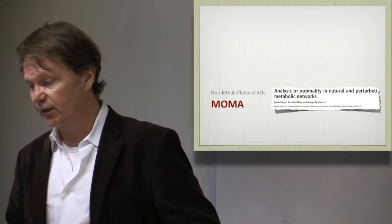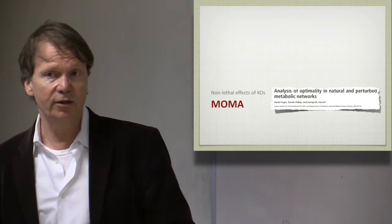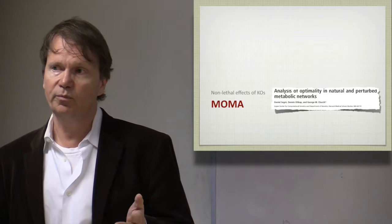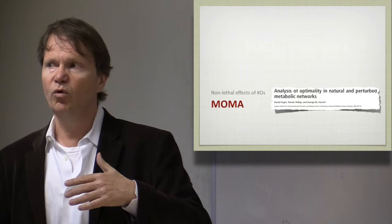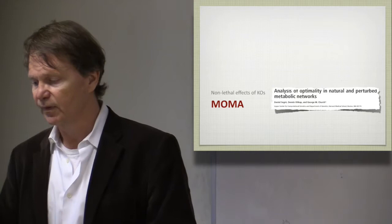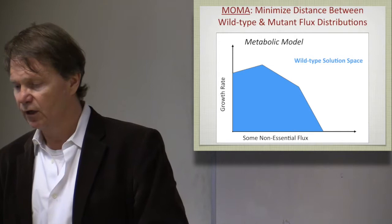So let me then say a few things about the prediction of gene knockouts that does not lead to a lethal phenotype, but a phenotype that is altered. And the minimization of metabolic adjustment was the first method that came out to predict what the phenotypic state would be after the knockout of a gene. And the prediction just is that the network moves as little away from its original phenotypic state as possible. And here's the way this is illustrated.